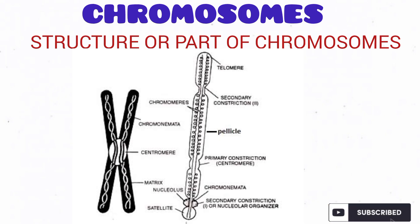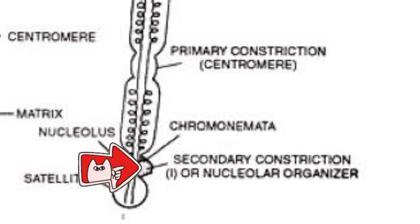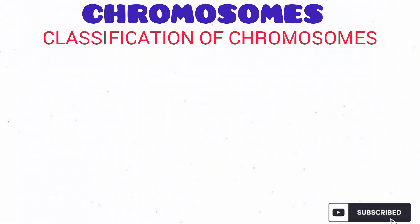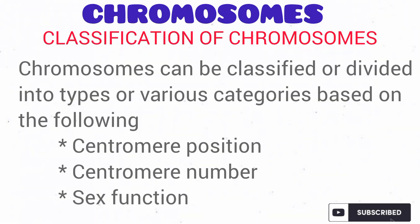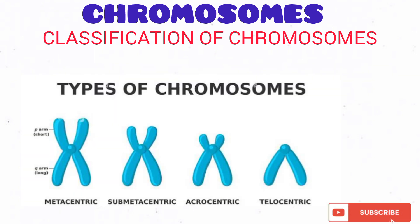The last structure of the chromosome, as you can see from the diagram, is the nuclear organiser, also called the secondary constriction, which is present in some chromosomes. Let's talk about the classification of chromosomes. Chromosomes can be divided into various categories or types based on the following: centromere position, centromere number, and their function.